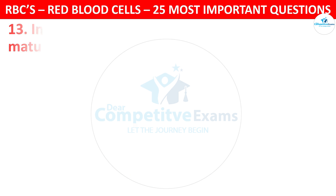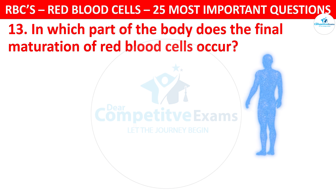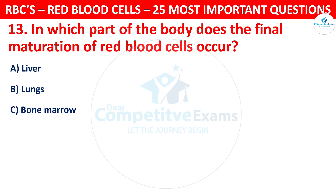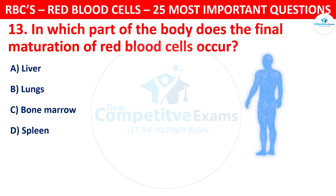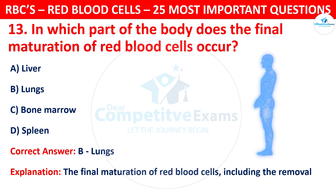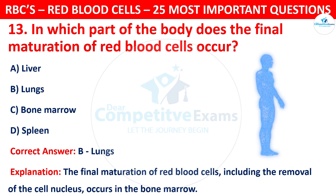Question 13. In which part of the body does the final maturation of red blood cells occur? The options are: Liver, Lungs, Bone Marrow, or Spleen. The correct answer is B, that is Lungs. The final maturation of red blood cells, including the removal of the cell nucleus, occurs in the bone marrow.